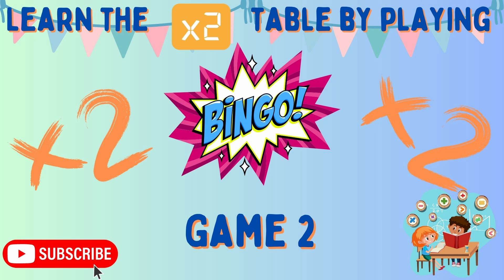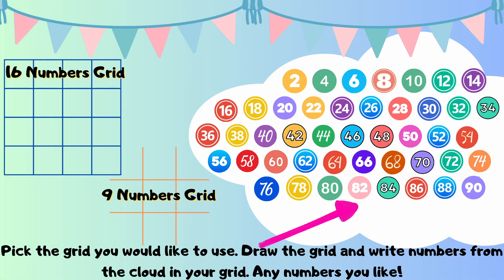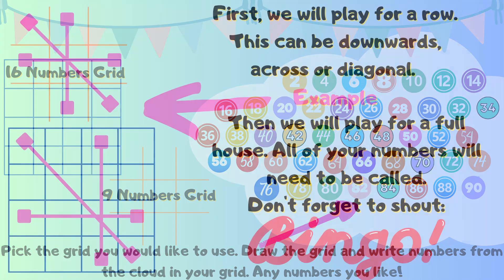Let's explain the rules of today's game. So much like last game, this is also going to be played with multiples of 2. All of those numbers there in the cloud are all of the numbers we're going to be playing with today. You can use any grid you like, but we recommend for this amount of numbers a 9 or a 16 number grid is perfectly OK.